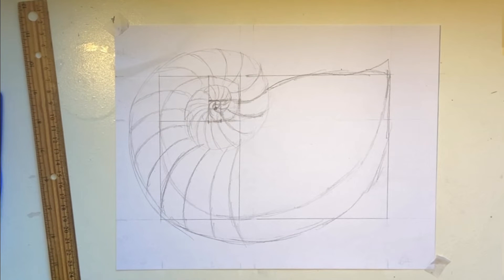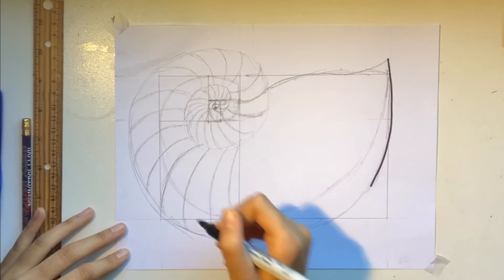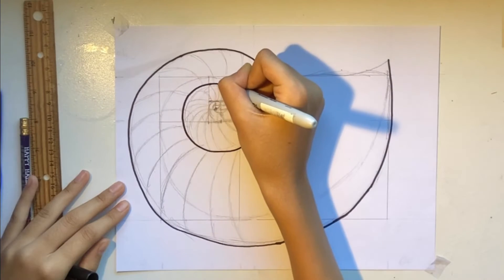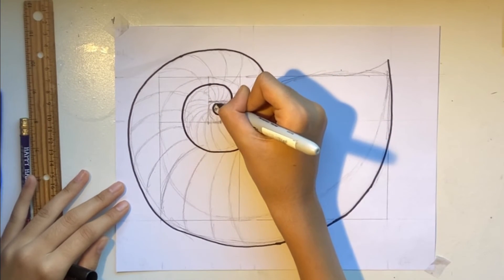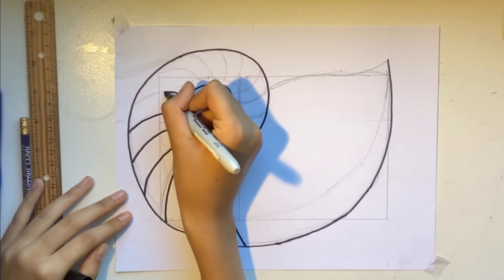Now, we can start outlining. We're going to use a thick marker to outline our shell and a thin marker to outline the golden ratio so that our shell stands out.